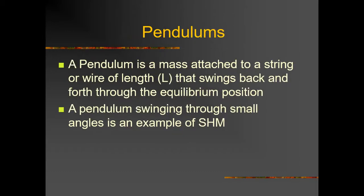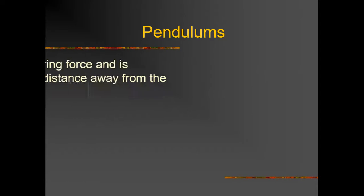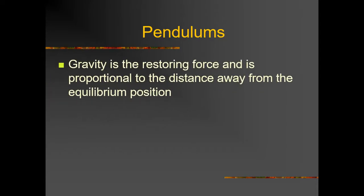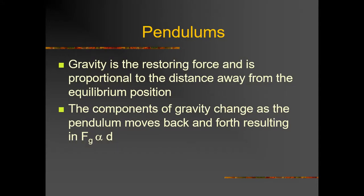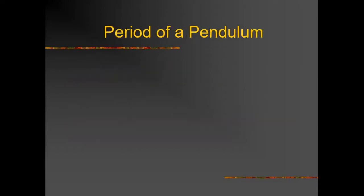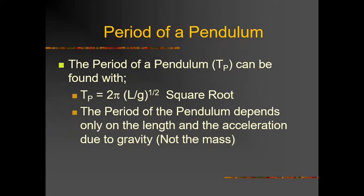A pendulum is a mass attached to a string of length L that swings back and forth through the equilibrium position — an example of simple harmonic motion. Gravity is the restoring force and is proportional to displacement from equilibrium. The period of a pendulum is T = 2π√(L/g), which depends only on the length L and the acceleration due to gravity g.